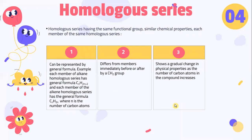Moving on to the homologous series: members have the same functional group and similar chemical properties. Each member can be represented by a general formula. For alkanes, the general formula is CnH2n+2, and for alkenes it is CnH2n, where N is the number of carbon atoms. Each member differs from the one before or after by a CH2 group, and there is a gradual change in physical properties as the number of carbon atoms increases.